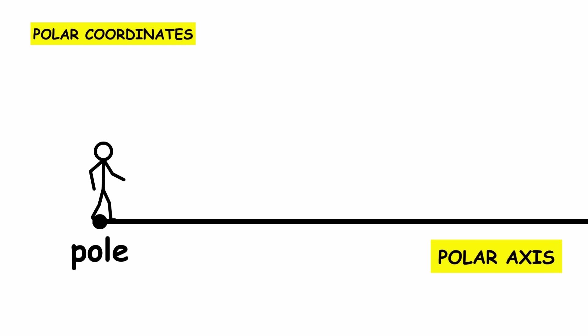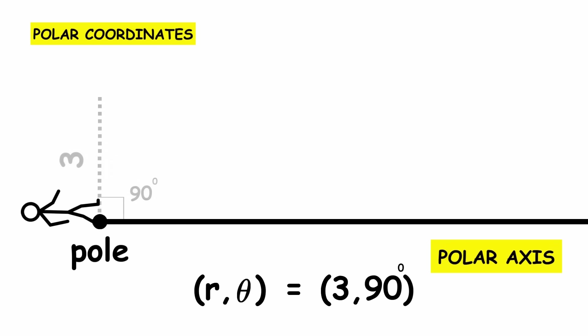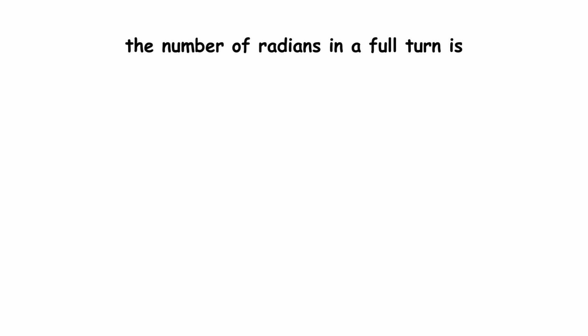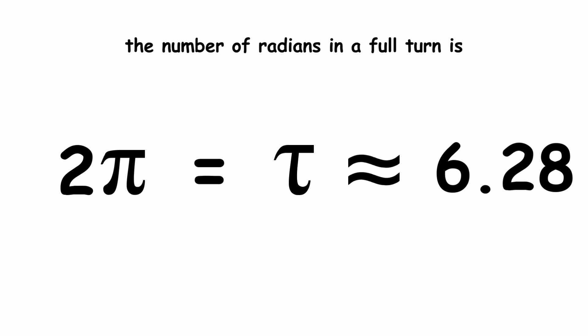For instance, if the coordinates are r theta equals 3 90 degrees, then rotate 90 degrees counterclockwise and walk 3 units forward. Actually, mathematicians like using radians, not degrees. The number of radians in a full turn is 2 pi, also known as tau, which is about 6.28.